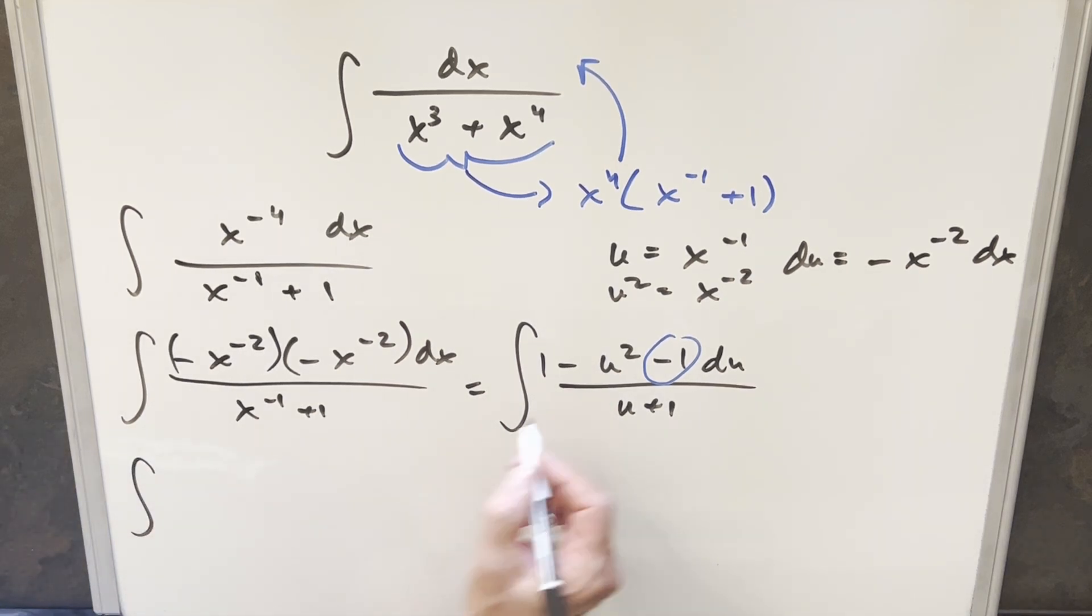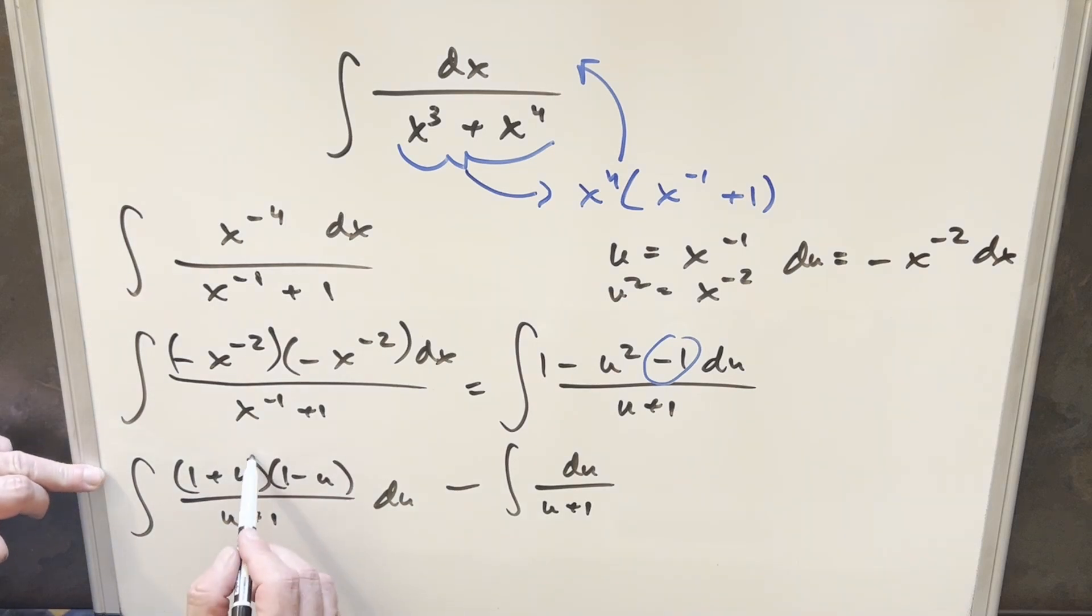So for this first one, we'll factor the 1 minus u squared. I can factor that as 1 plus u, 1 minus u. That's going to be over this. And for the second one, for this minus 1, we'll just have the minus sign up front. This is going to become du over u plus 1. Now back to the first one here, we can cancel this u plus 1 and u plus 1. So now we're just integrating 1 minus u.